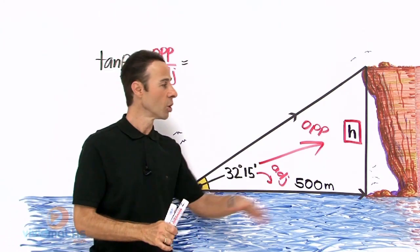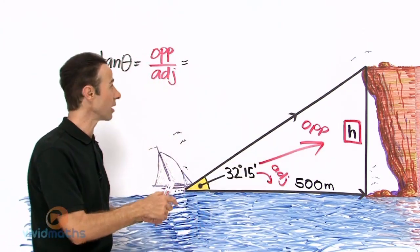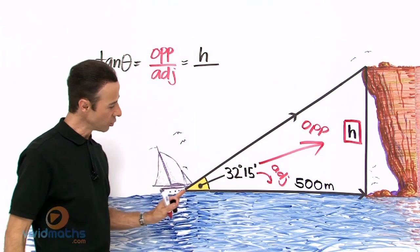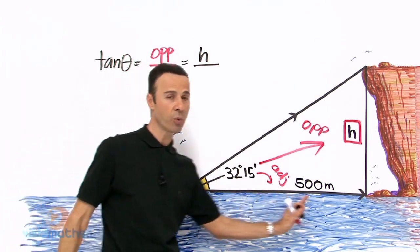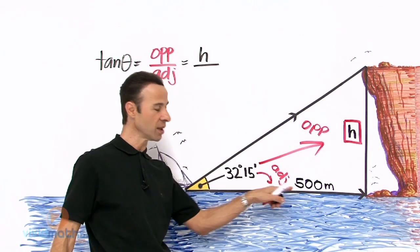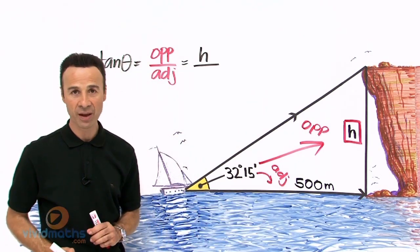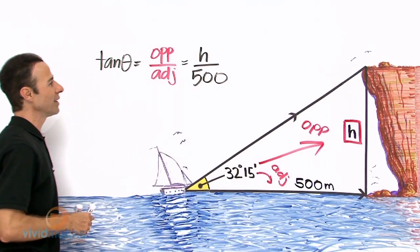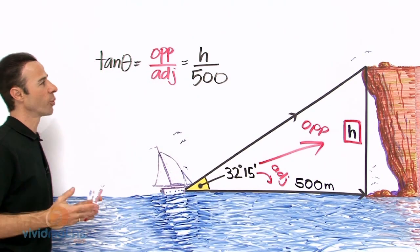And that equals, let us put in the numbers. Well straight over here for the opposite we have h. Let us put that in, all over, and then adjacent, which is the distance from the boat all the way to the base of the cliff. We can see here written there, 500 meters. Let us put that in.